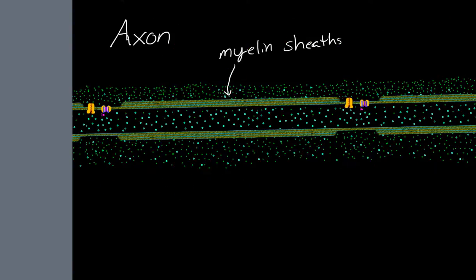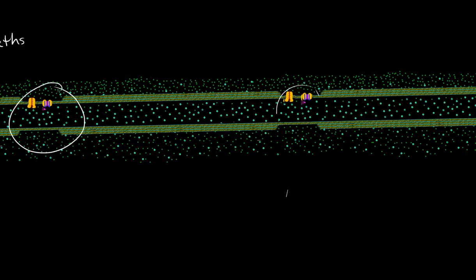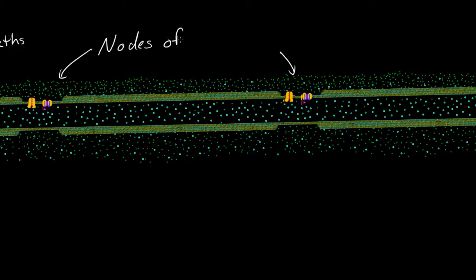The next part are these gaps. You see there are these gaps every so far distances. And these are the nodes of Ranvier, or Ranvier. I believe it's French or something. But they are the nodes of Ranvier.